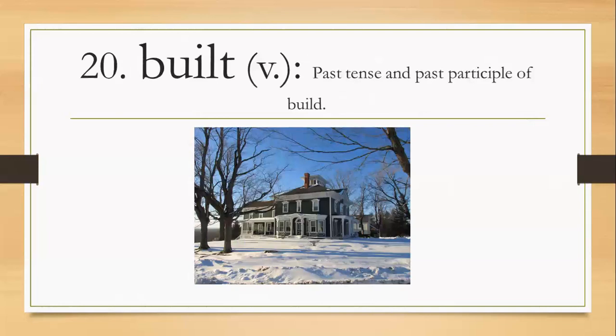Number twenty, built, B-U-I-L-T, built. It's a verb, the past tense, past participle of build. One of the words in the beginning of this list was build, B-U-I-L-D at the end. So build, built. They built the house, and now the house is built.